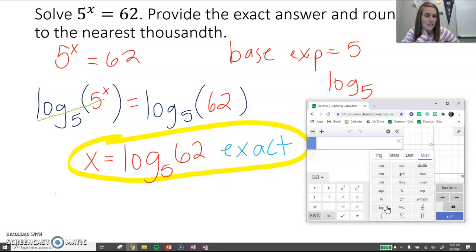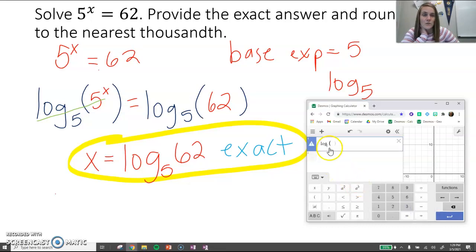And you'll see that there is just log, but that's not what we want. We actually want the log that has that little a that represents that you can change the base. So if I click that, notice that my cursor is at the base, so that's where I would type in 5. And then I can click my right arrow to go inside the parentheses to type my 62. And so that is our logarithm.